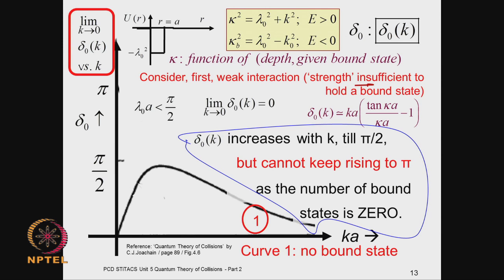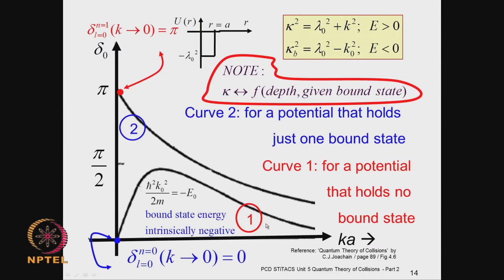If the potential has a little more depth or range, it will pick up a bound state once λ₀a crosses π/2 — that is the threshold value, the minimum strength required. When you do have one bound state, the phase shift as k → 0 equals nπ with n = 1. The phase shift begins at π and then keeps falling. The behavior of the phase shift changes in a dramatic manner depending on the number of bound states. These graphs are straight from Jo Shane's book, figure 4.6.